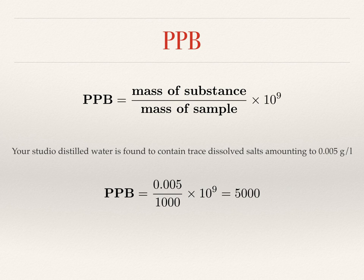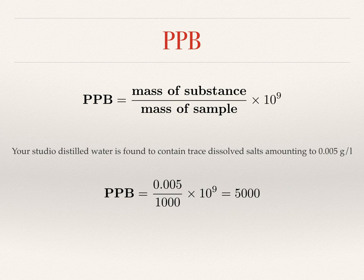Parts per billion is used when you have even smaller amounts of a substance. You're really unlikely to come across this in conservation unless you're using very pure water in the studio — in which case the distillation apparatus for generating the pure water may have a specification listing residual contaminants in the parts per billion range. For example, if your studio distilled water contains dissolved salts amounting to 0.005 grams per litre, that's about 5000 parts per billion — a fairly large amount, but completely negligible for conservation, and certainly much cleaner than standard tap water.